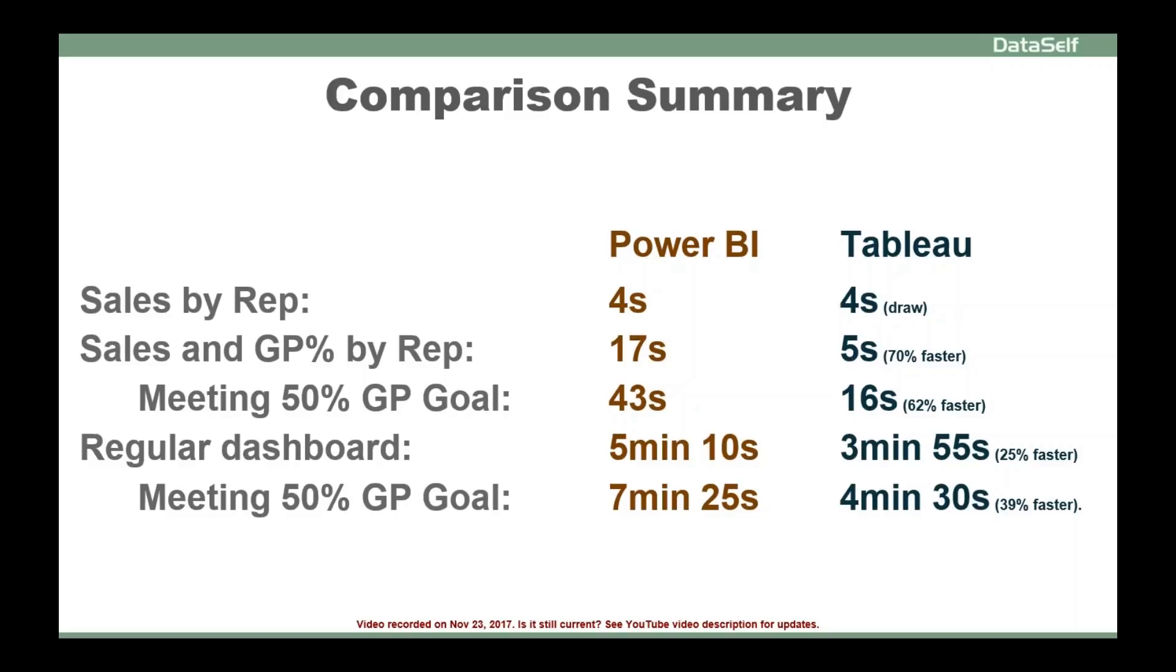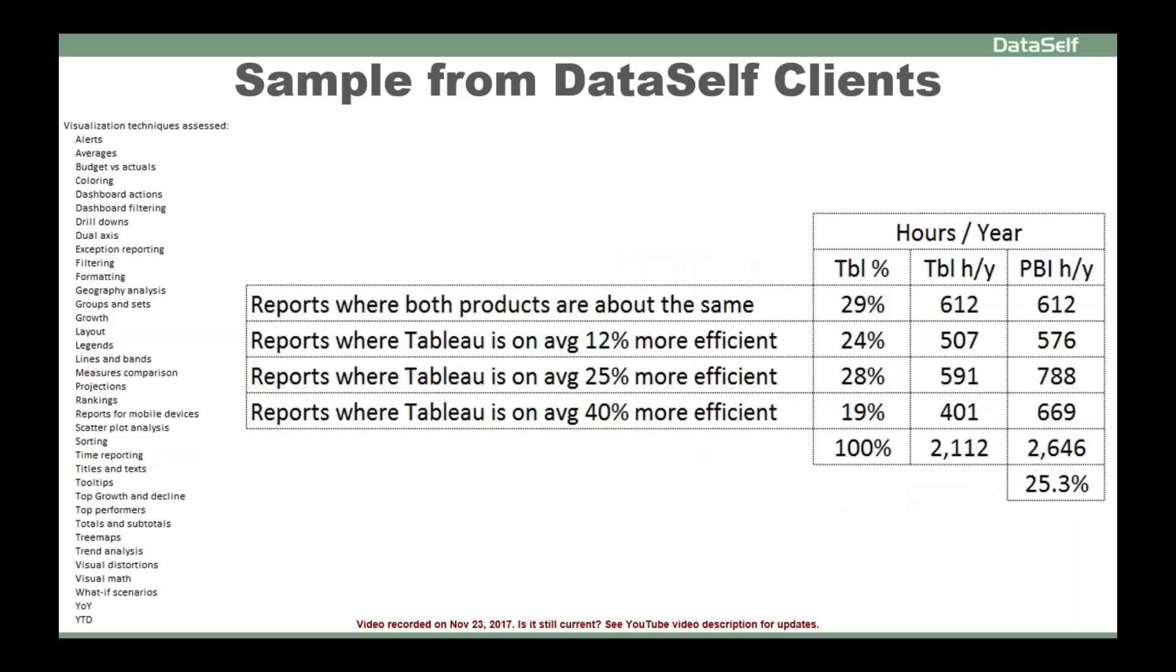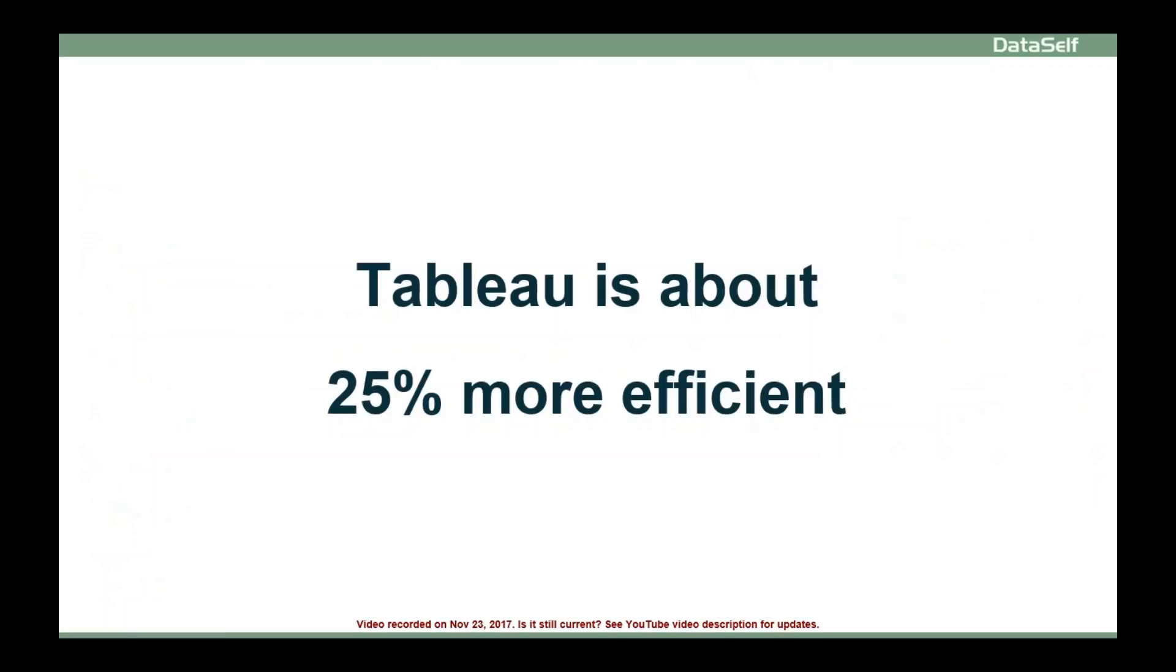This is just conveying the point there are a lot of things in Tableau that will become more efficient. And there's actually no place this can play a big role in the long run. We actually took a handful of our clients and we looked at what they did in the last couple of years when it comes to ad hoc analysis and authoring. And we looked at several different criteria or visualization technique criteria and we assessed them and we classified them into reports where both products are about the same, reports where Tableau is about 12% more efficient, 25% more efficient, and 40% more efficient. And we just did a crunch of all the numbers and extrapolated looking at what if a person is working full-time a whole year doing this, and we came up with a figure that says that on average for these clients, Tableau is about 25% more efficient than Power BI when it comes to ad hoc analysis and authoring.